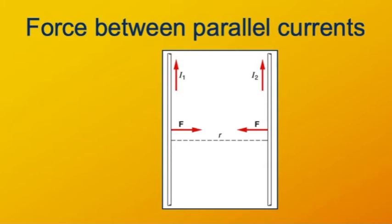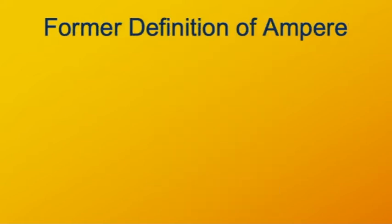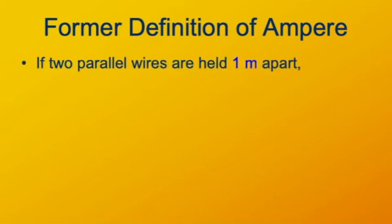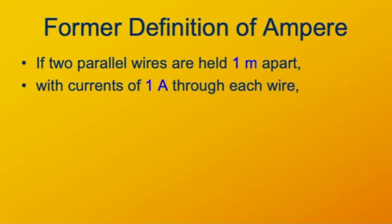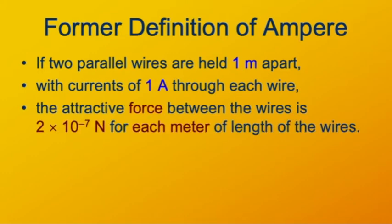You can use exactly the same kind of analysis to realize that anti-parallel currents are going to repel each other. This was the origin of the definition of the ampere valid until about a year ago. The definitions of some basic SI units were changed, and the fundamental electric unit is now the coulomb, based on the elementary charge. Before about April 2019, the ampere was the fundamental SI unit for electricity, and the coulomb was defined in terms of the ampere. The ampere was defined as: two parallel wires held one meter apart, each carrying one ampere, produce an attractive force of 2×10⁻⁷ newtons per meter of wire length. Now that this is no longer the definition, mu naught has a measured value rather than a defined value.